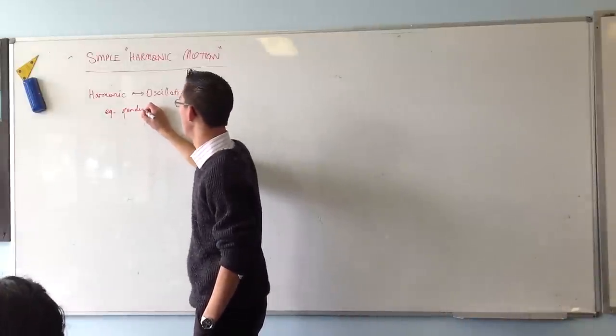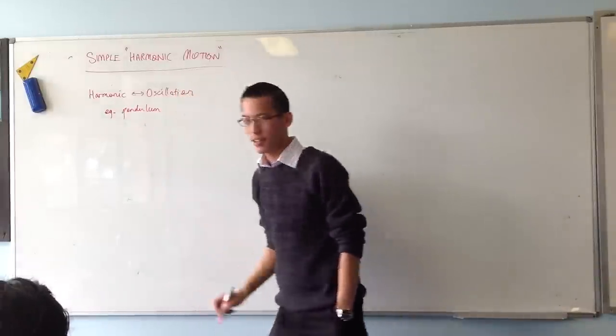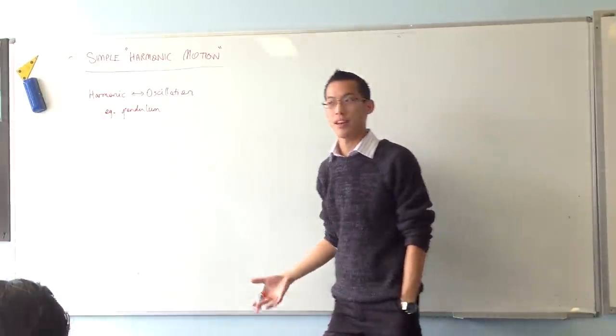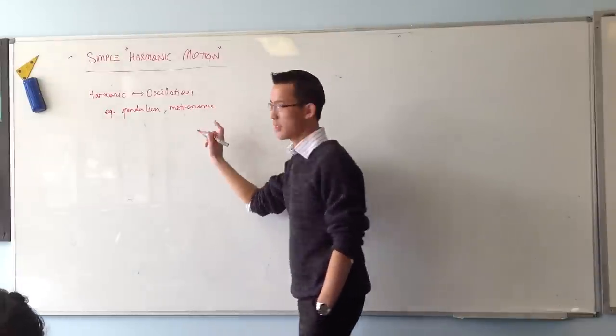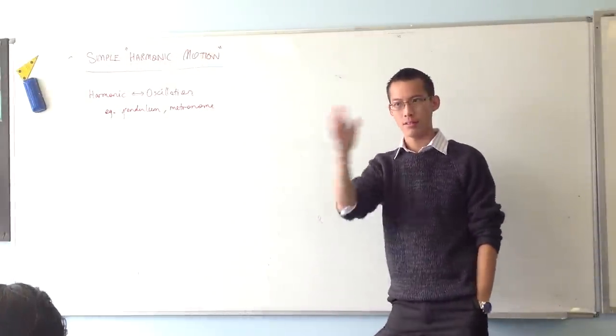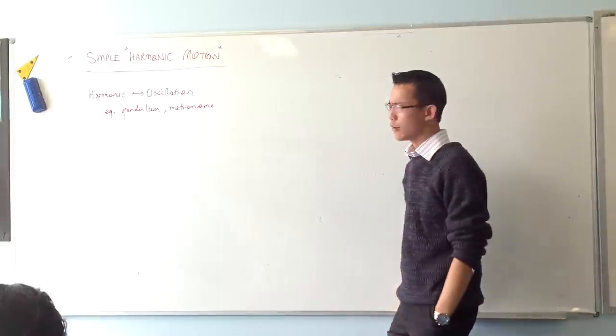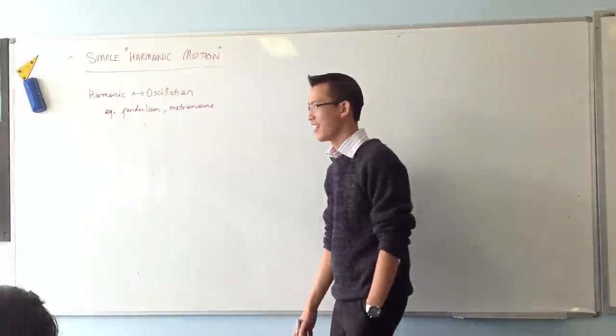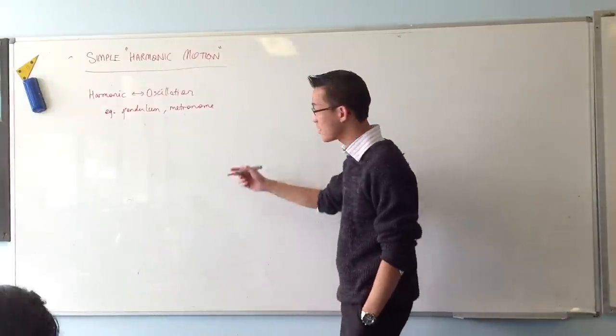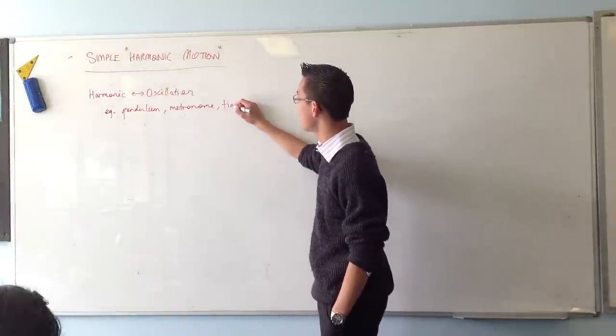A pendulum is the classic example. I'll talk about the pendulum in more detail in a second. Another good example would be, say, a metronome. It ticks back and forth. Now these tend to be left, right, left, right. What kinds of things go up and down? I would say tides, for instance. Tides go up and down.